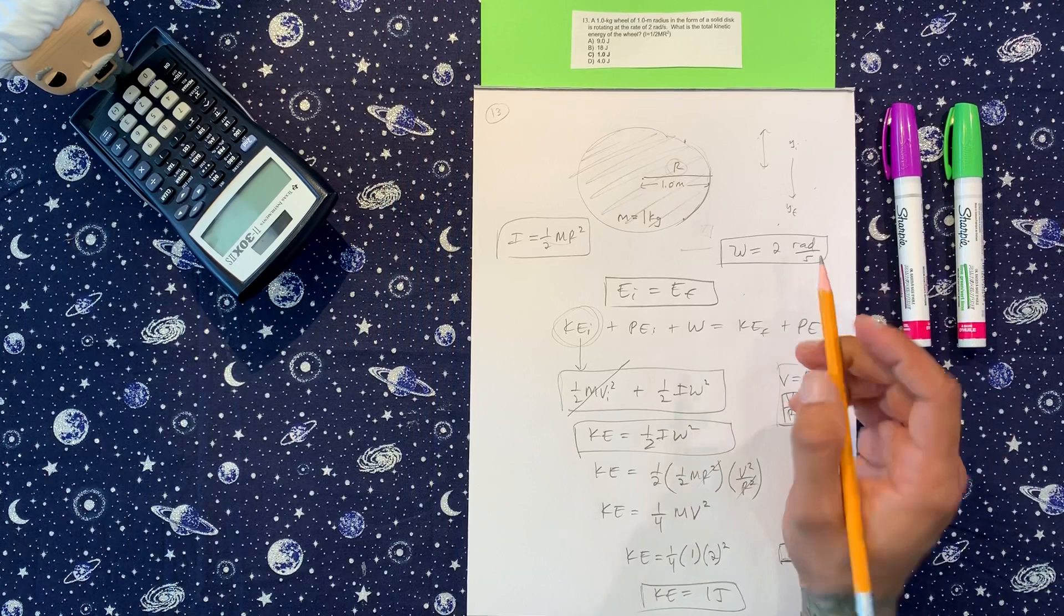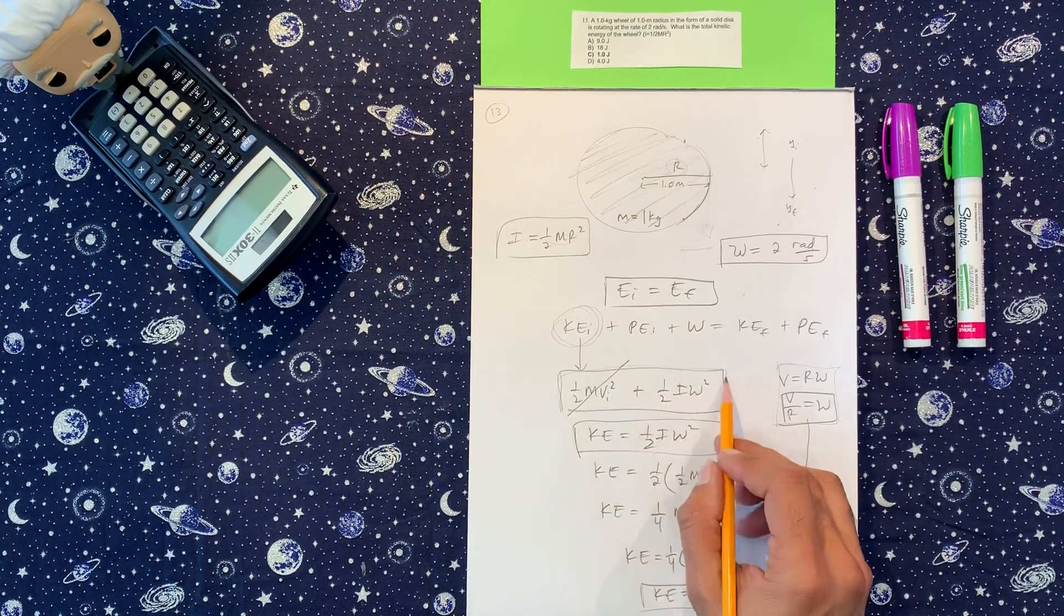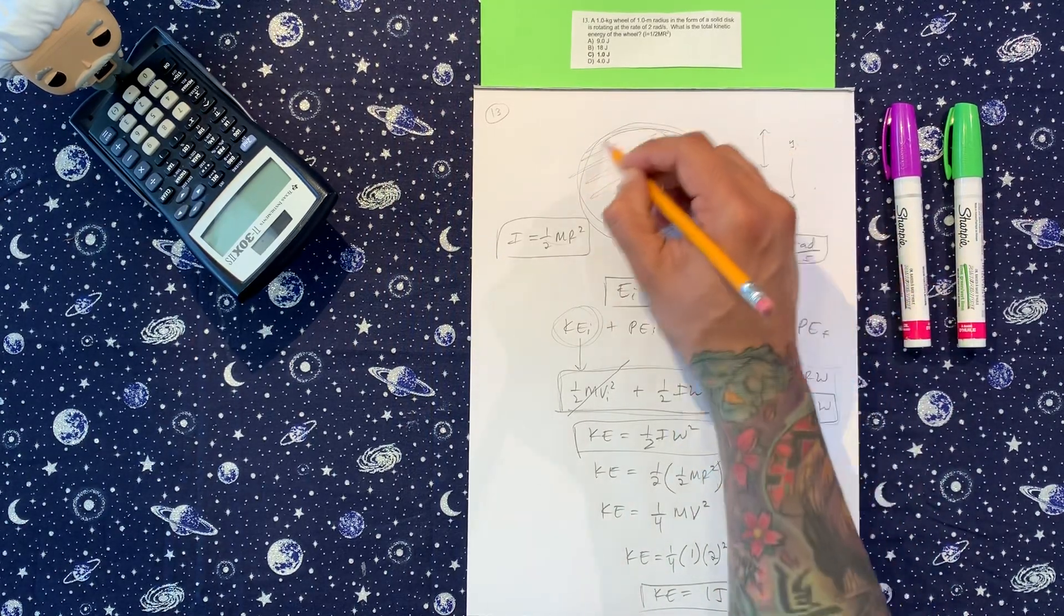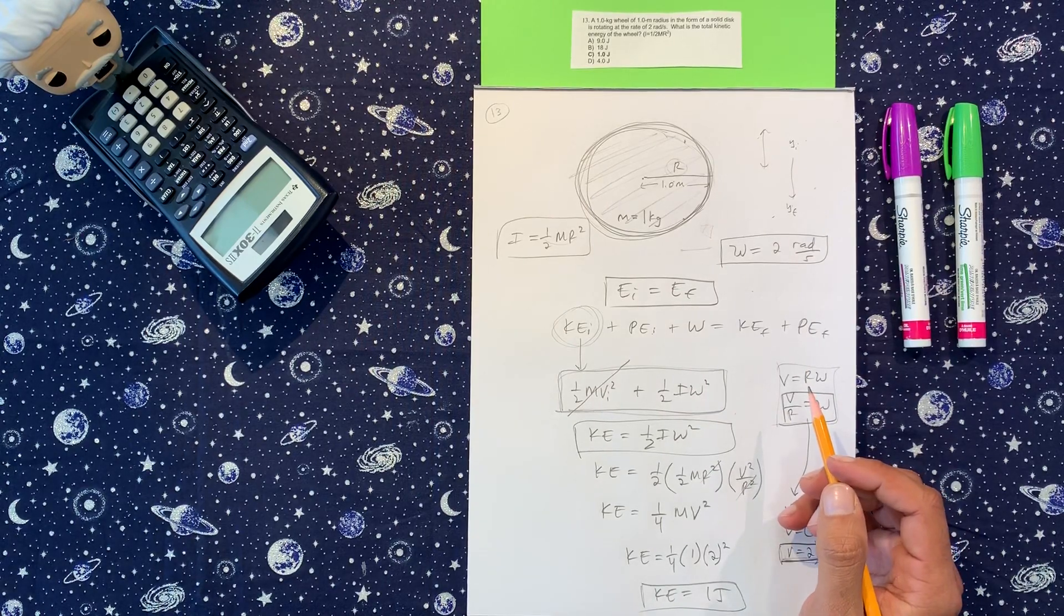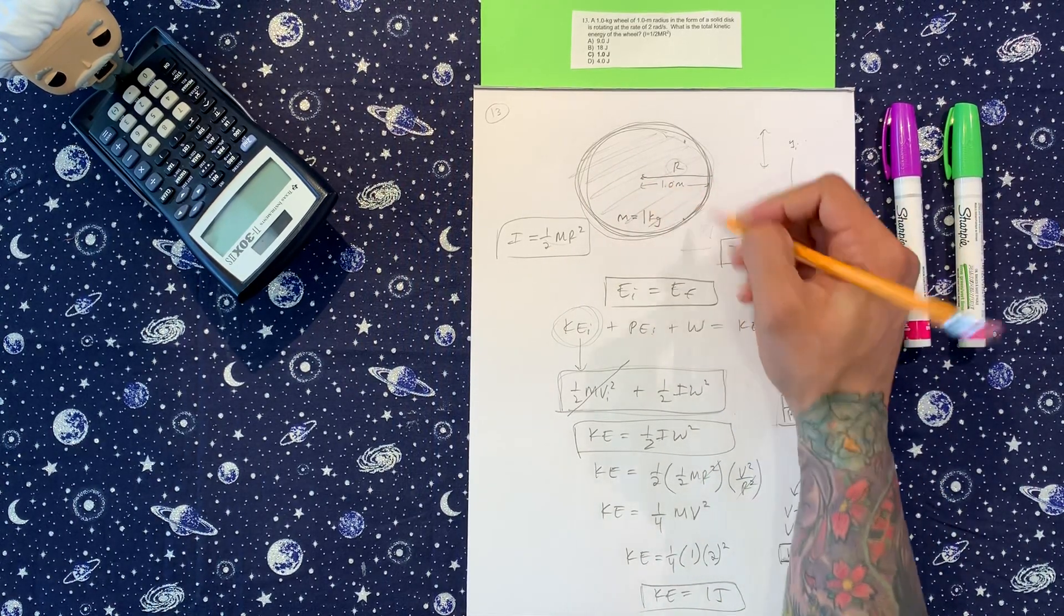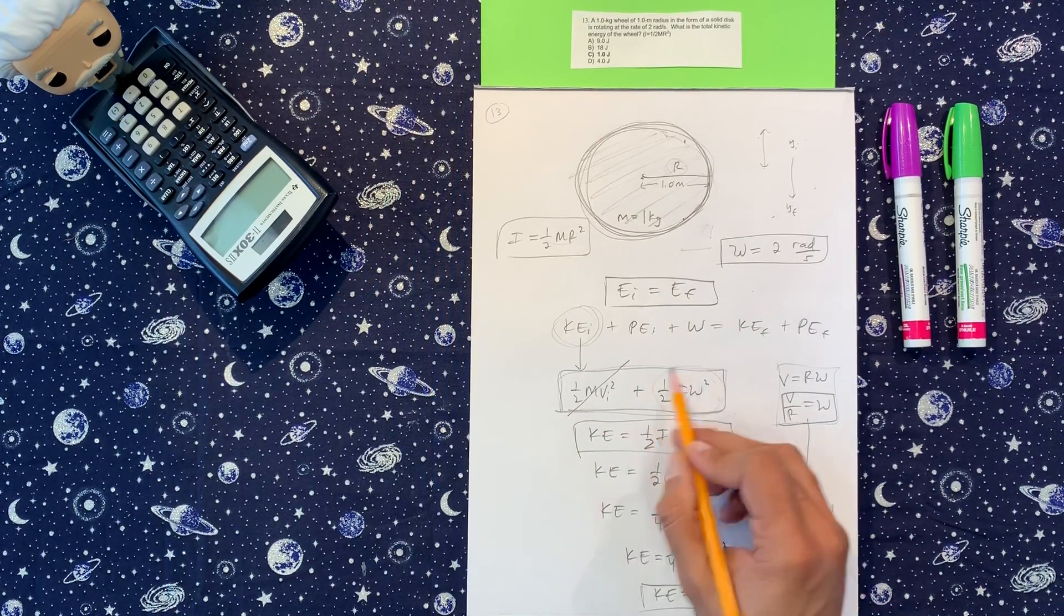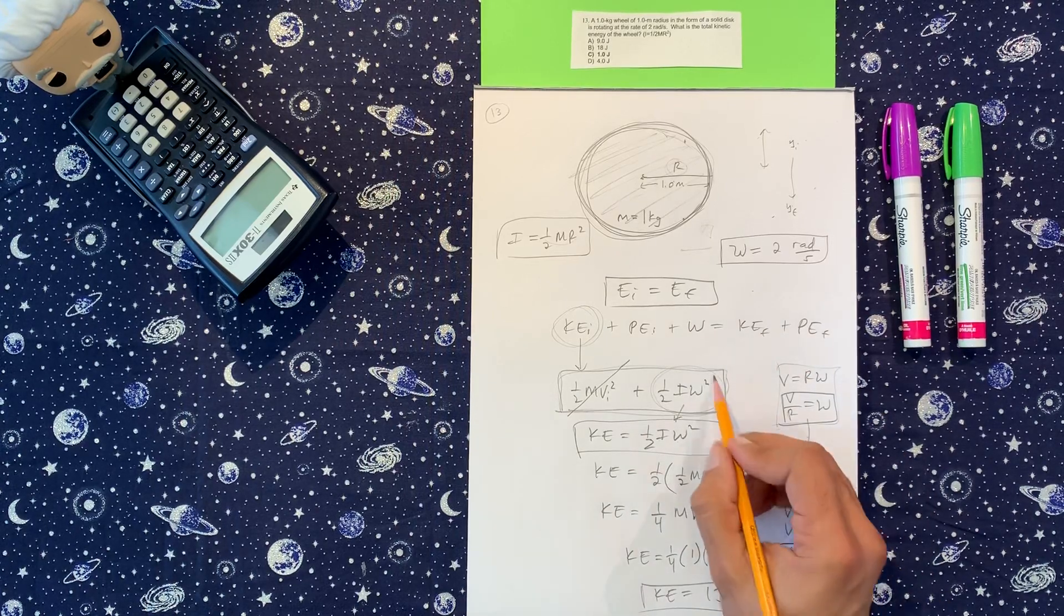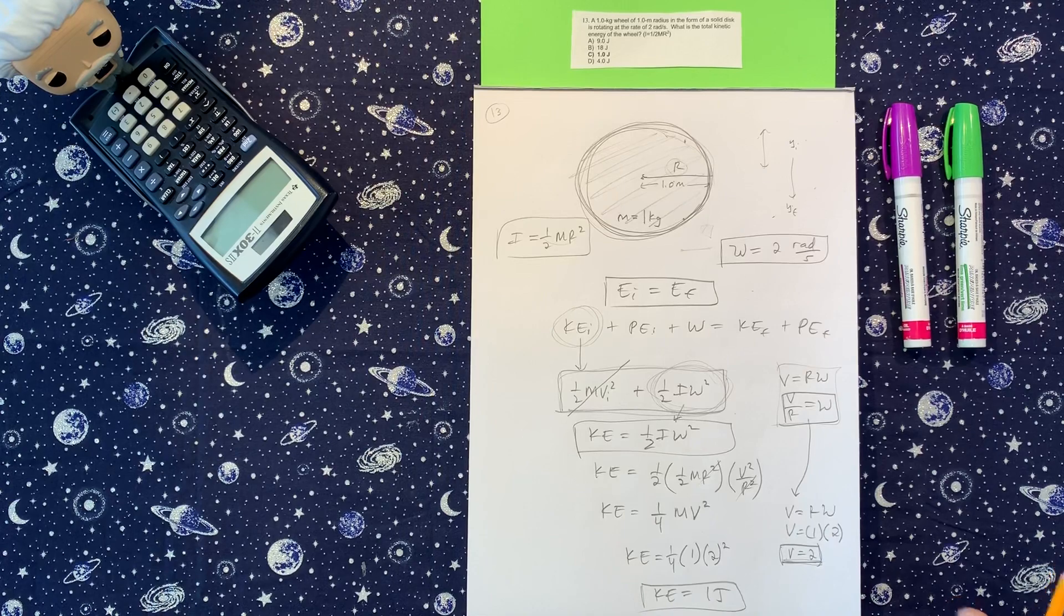So the hardest part here is understanding that the kinetic energy is made up of translational and rotational. But here, they only want to know what's going on with this disc. And there is nothing hanging from this disc or anything like that that would give us translational motion. So we're stuck with this. And that's the only thing we need moving forward. So this part is going to be the hurdle to overcome for that one.